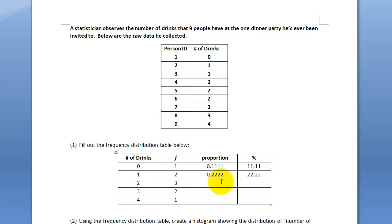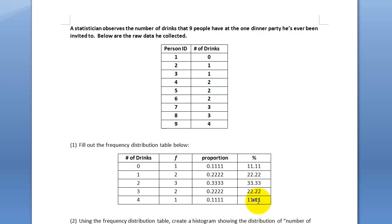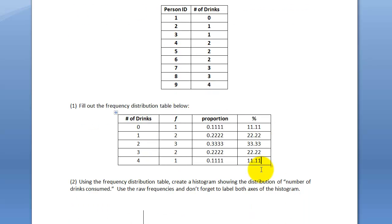For two drinks, three out of nine — it happens three times out of nine — so that's 0.3333..., which is 33.33%. The sum of proportions is supposed to be one, but in this case it's going to be 0.9999... repeating, and that's 99.99%, because of the infinite repeating decimal.